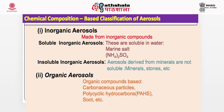Chemical composition-based classification divides aerosols into organic and inorganic types. Inorganic aerosols can be soluble (e.g., ammonium sulfate, marine salt NaCl) or insoluble (e.g., minerals and stones). Organic aerosols are made from organic compounds — carbon-based materials such as carbonic particles, polycyclic aromatic hydrocarbons (PAHs), and soot.